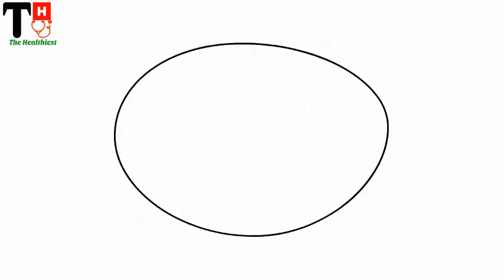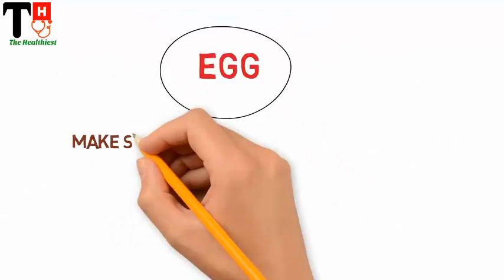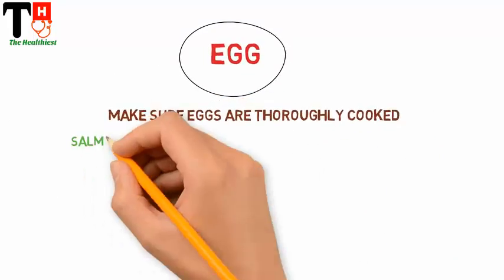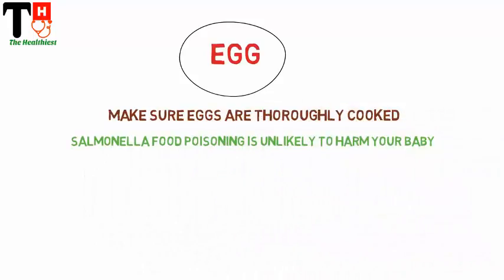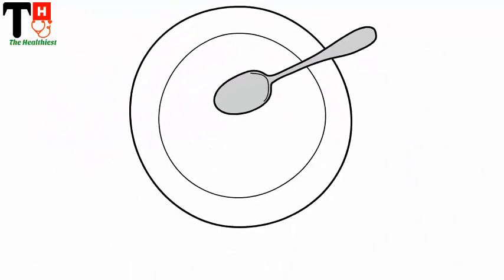Make sure eggs are thoroughly cooked until the whites and yolks are solid to prevent the risk of Salmonella food poisoning. Salmonella food poisoning is unlikely to harm your baby but it can give you a severe bout of diarrhea and vomiting. Avoid foods that contain raw and undercooked eggs.